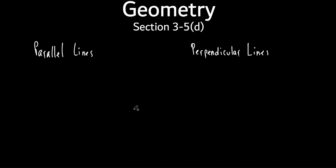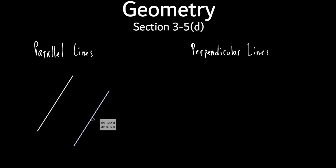Let's talk about parallel lines. If you just walked up to somebody on the street and had to tell them everything you know about parallel lines, what's the first thing you'd say? They don't intersect each other. Technically, they're in the same plane and they don't intersect — lines that don't intersect but aren't in the same plane are called skew lines. So any two lines that lie in the same plane and don't intersect each other are parallel lines.